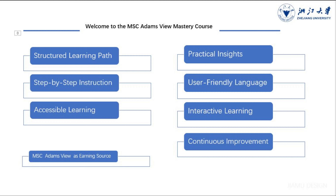User-Friendly Language: The course uses easy-to-understand language, making complex concepts more accessible to learners of all backgrounds. Whether you have a technical background or not, you'll find the course content easy to follow and understand. Interactive Learning: Learners are encouraged to engage with the material actively, whether through interactive quizzes, exercises, or discussions. This interactive approach fosters a deeper understanding of the subject matter. Continuous Improvement: The course is regularly updated to incorporate the latest features, best practices, and user feedback, ensuring learners receive the most up-to-date and relevant information throughout their learning journey.